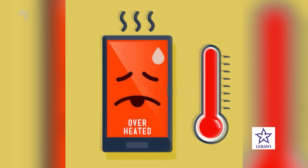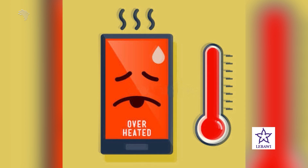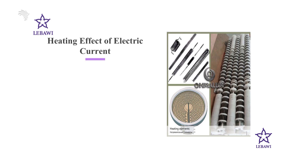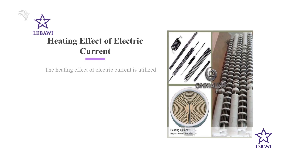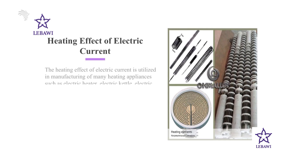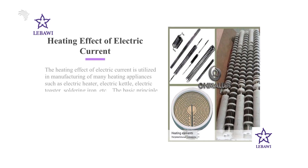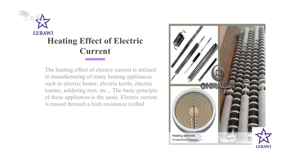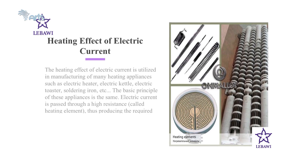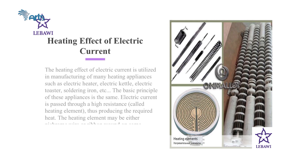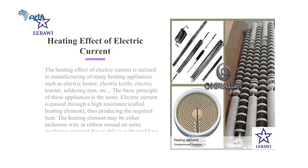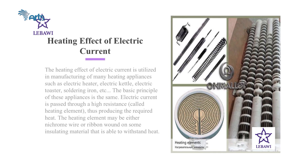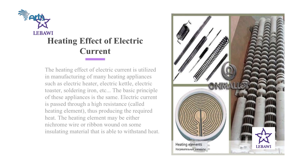This is the same reason why mobile phones tend to go hot when we play a game on them. The heating effect of electric current is utilized in manufacturing many heating appliances such as electric heater, electric kettle, electric toaster, and electric iron. The basic principle of these appliances is the same: electric current is passed through a high resistance heating element, thus producing the required heat. The heating element may be a nichrome wire or ribbon wound on some insulating material able to withstand heat.